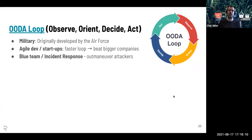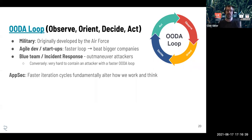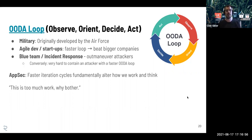Closer to security, we also see this in blue team or incident response. If you can understand the attacker's actions and how they're trying to spread and persist faster than they can understand the environment, that's how you contain and defeat them. Conversely, if an attacker is better at orienting and changing their tactics than your defensive team, it's very hard to kick them out. I think this also applies to application security and product security: if you can iterate quickly, this fundamentally can alter how we work and how we think about the problem space.